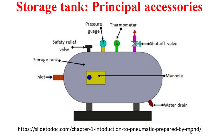In addition to the principal elements, there are also some principal accessories that can be installed in the storage tank. For example, the pressure gauge, which measures the pressure of the fluid inside the tank, and the thermometer, which measures the temperature of the fluid inside the storage tank.